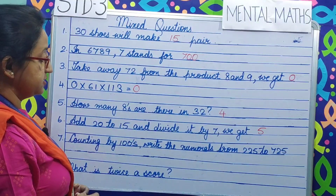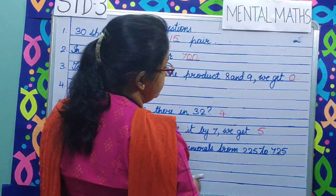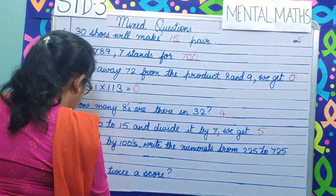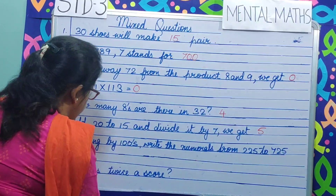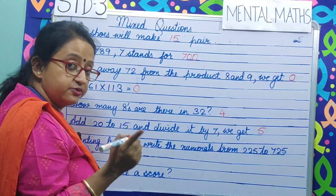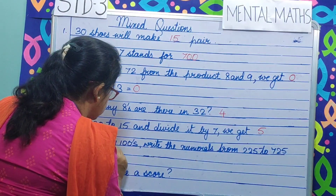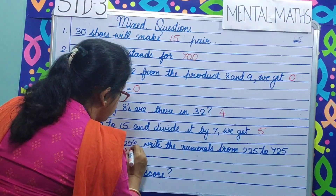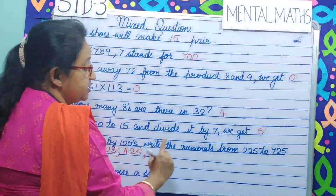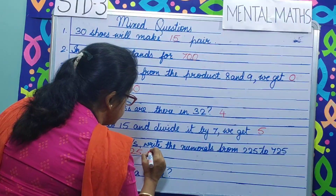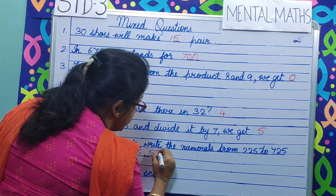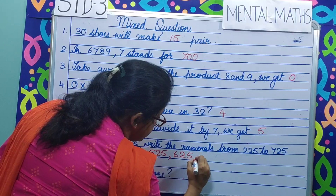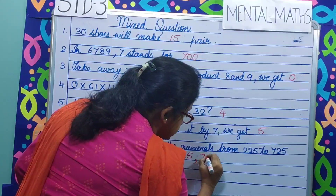Question number 7. Counting by hundreds, write the numerals from 225 to 725. Now 225, 100 plus 225 makes 325, 100 plus 325 makes 425. We keep adding 100: 525, 625, 725.